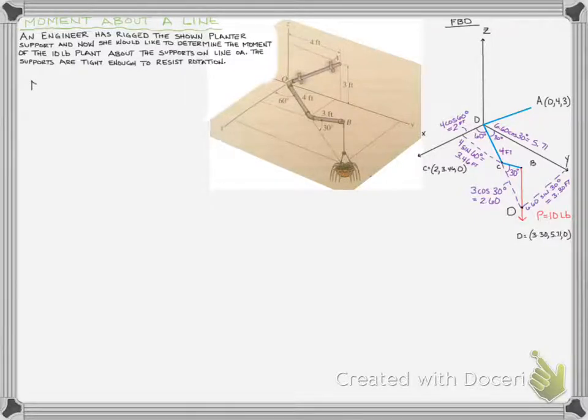Once you have the geometry down, remember we're trying to find the moment about line OA. That is the dot product of the unit vector of that line OA dotted with the cross product of R cross F. So let's first talk about this unit vector. The unit vector for the line is nothing more than the position vector of the line divided by the magnitude of the position vector.